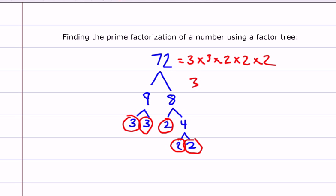So here's the prime factorization of 72, which is 3 squared times 2 cubed equals 72.